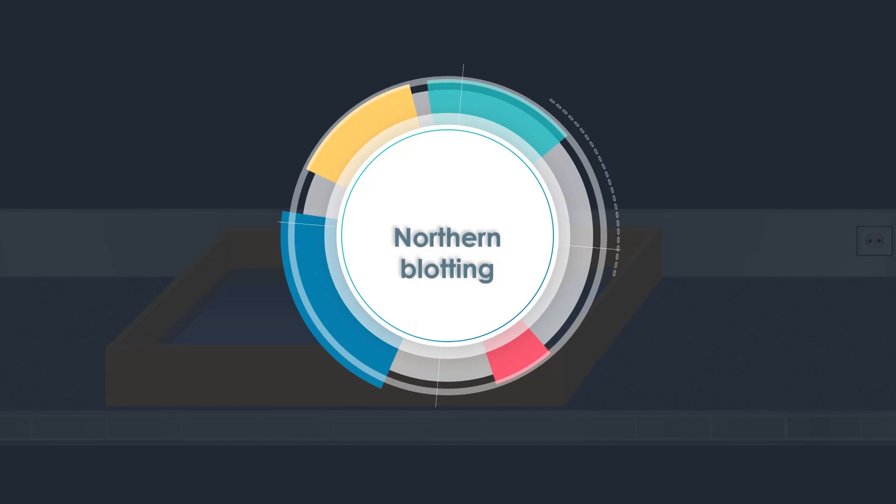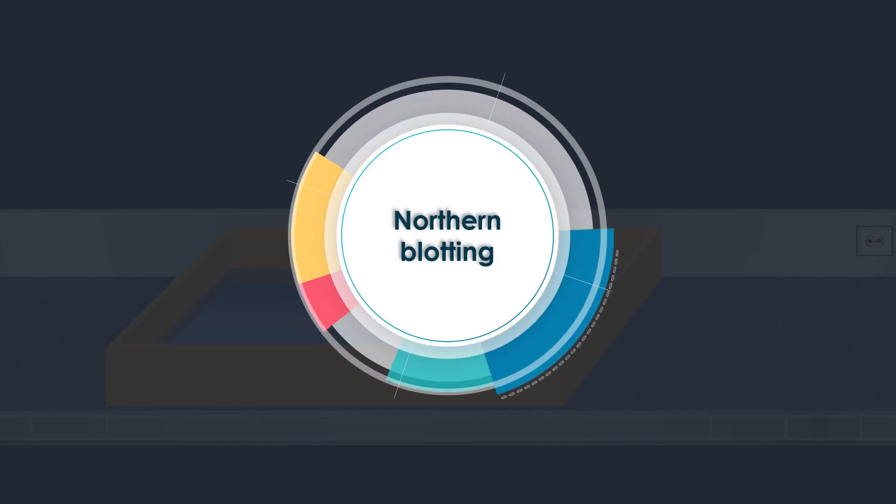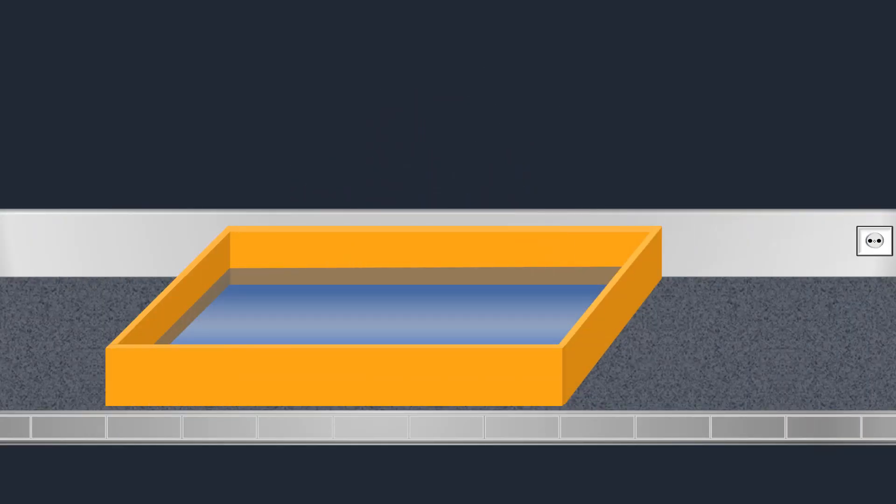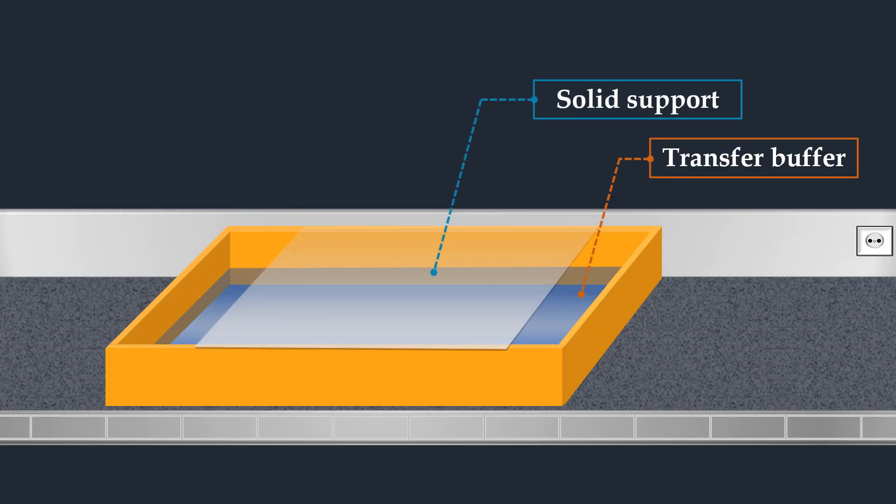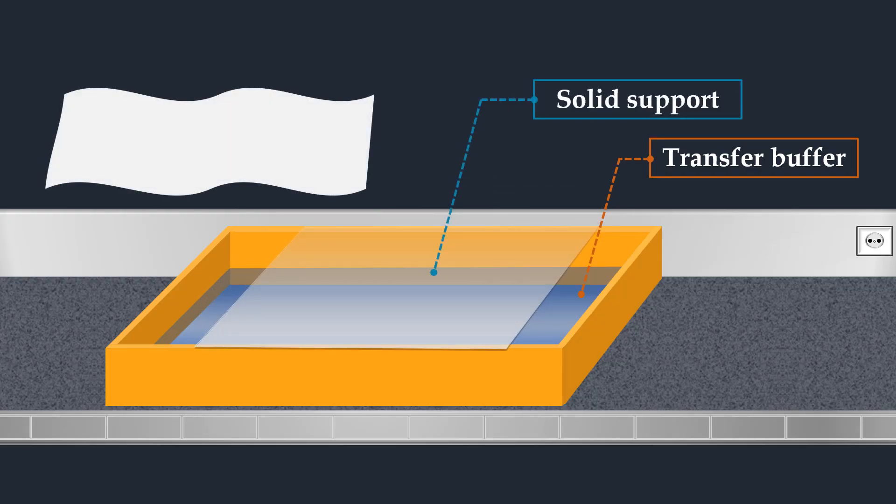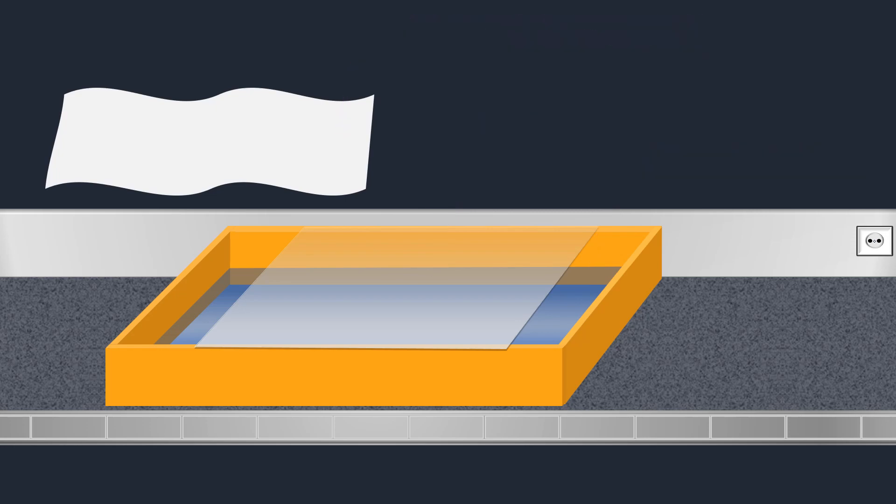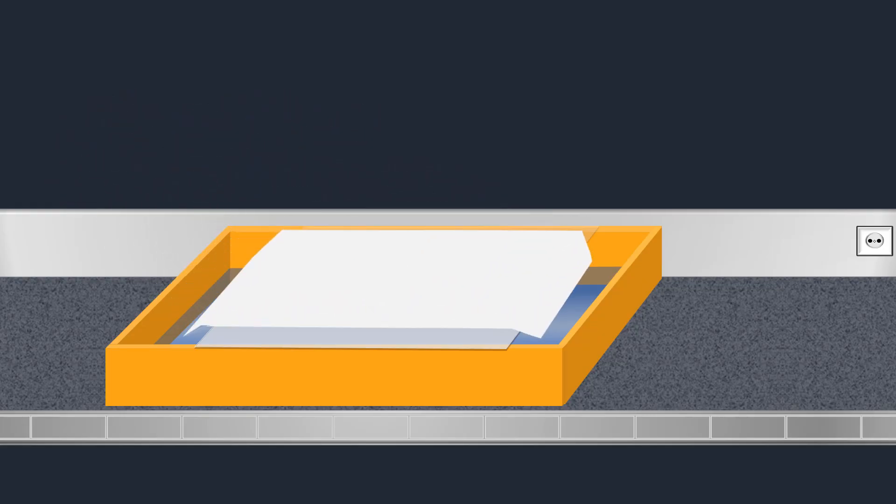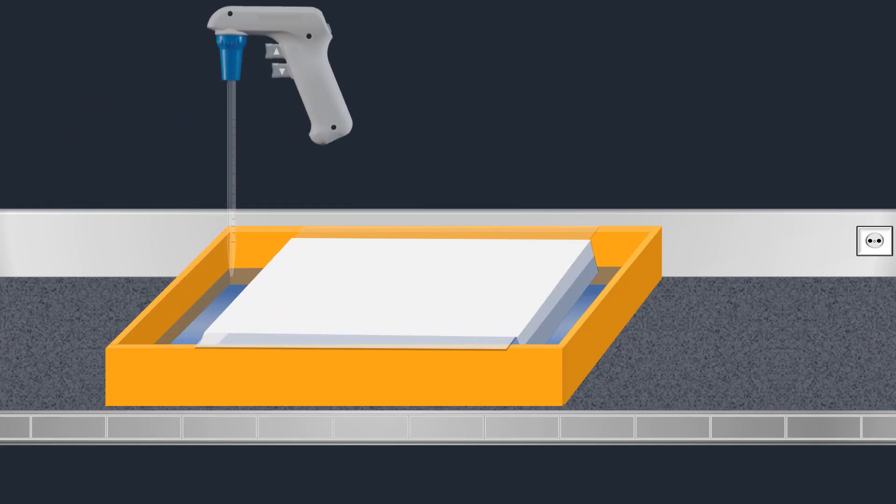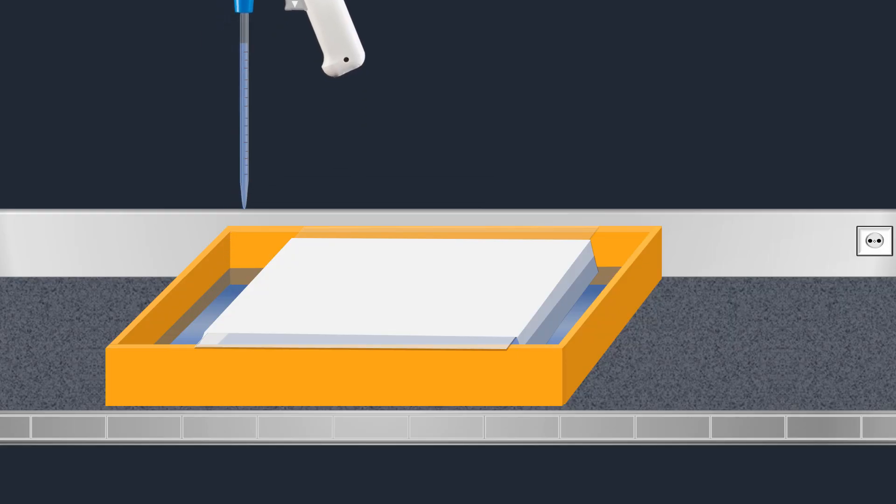After electrophoresis, the next step is northern blotting to transfer the RNA molecules to the membrane. A transfer buffer, a solid support, and a sheet of blotting paper acts as a wick for the transfer solution are used. The wick is placed over the solid support in the transfer reservoir so the ends will be in the transfer buffer, then it is wetted with the transfer solution.